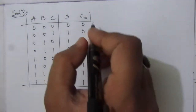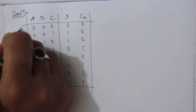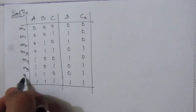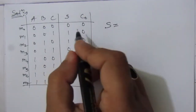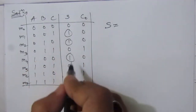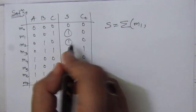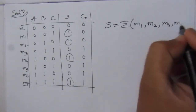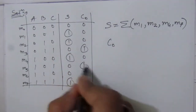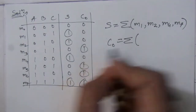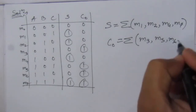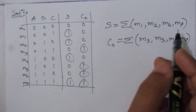We can write these outputs in terms of minterms m0 through m7. Sum has ones at m1, m2, m4, and m7. Carry out has ones at m3, m5, m6, and m7. So we have the sum-of-minterms expressions for both outputs.